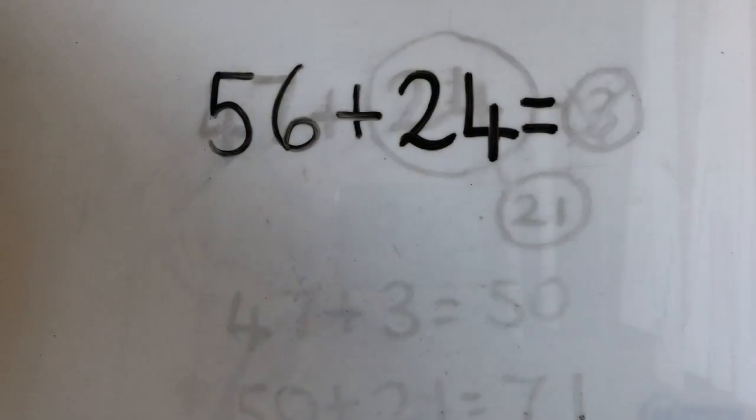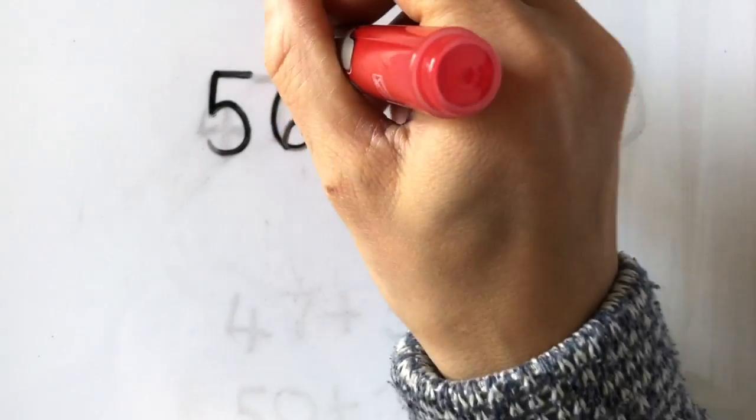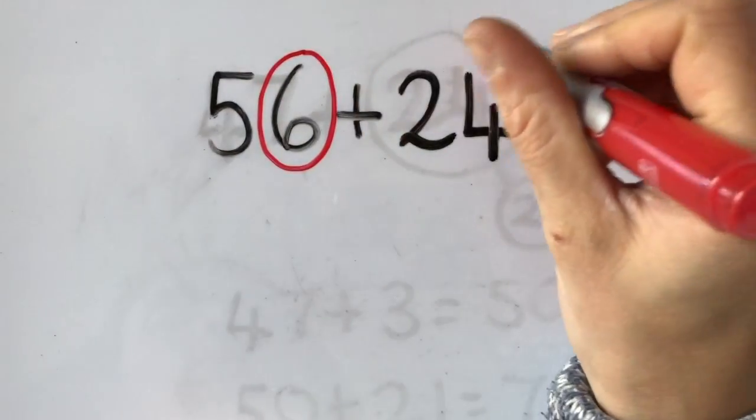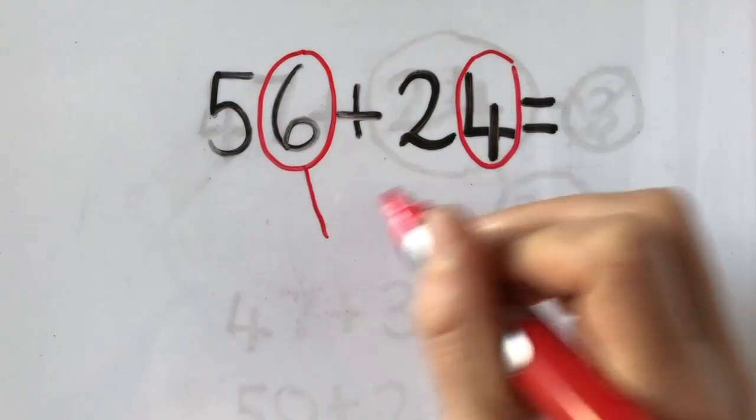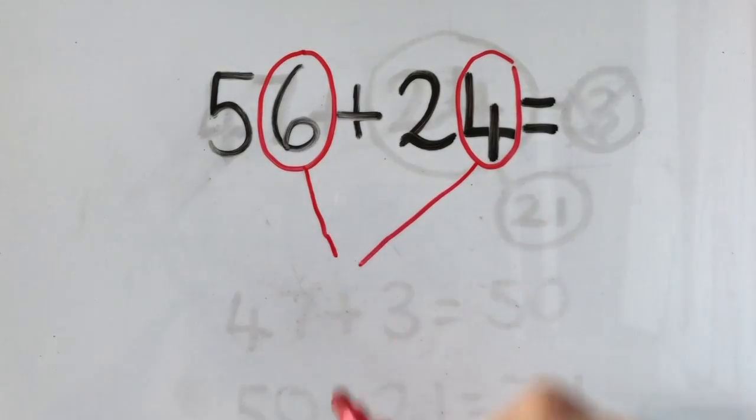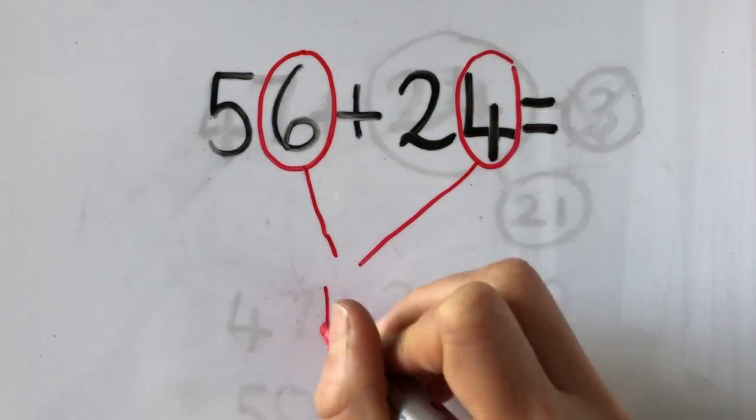So looking at that number, I can see that I have got a number complement here, I've got a number bond. Because I know that four ones and six ones make 10.